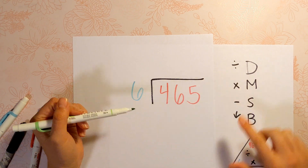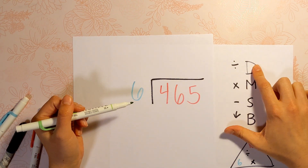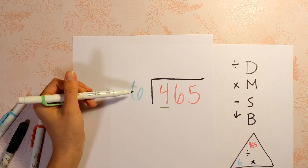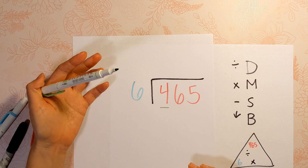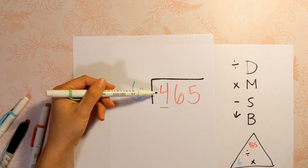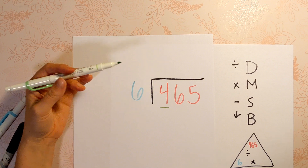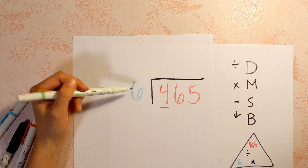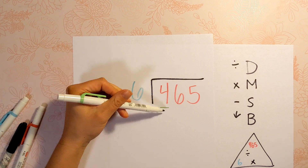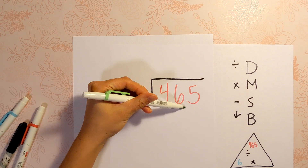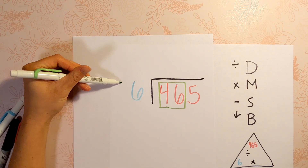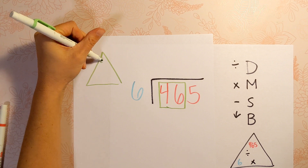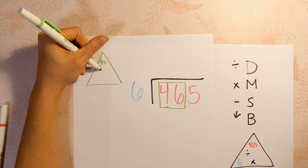Let's start one step at a time. First we divide. Normally we'd try 4 divided by 6, but you can't do that — if I have 4 pieces of candy and want to give them to 6 friends, I don't have enough. So instead we look at 46 divided by 6.